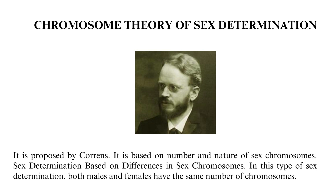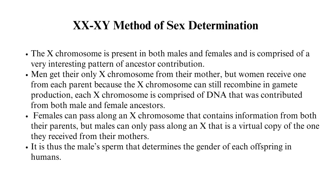In this type of sex determination, both males and females have the same number of chromosomes. The X chromosome is present in both males and females and is comprised of a very interesting pattern of ancestor contribution. Men get their only X chromosome from their mother, but women receive one from each parent because the X chromosome can still recombine in gamete production.